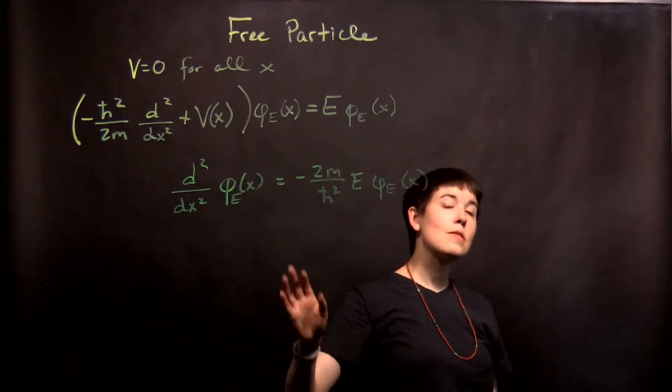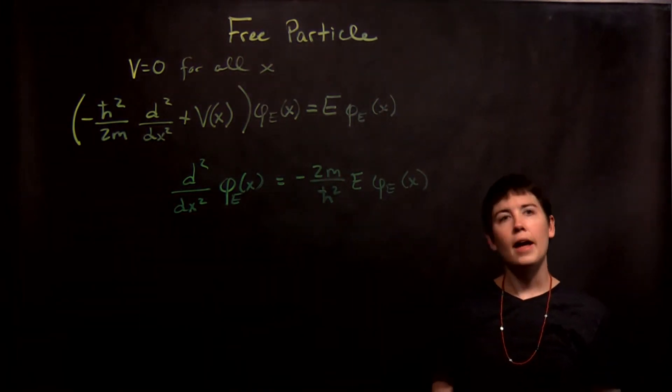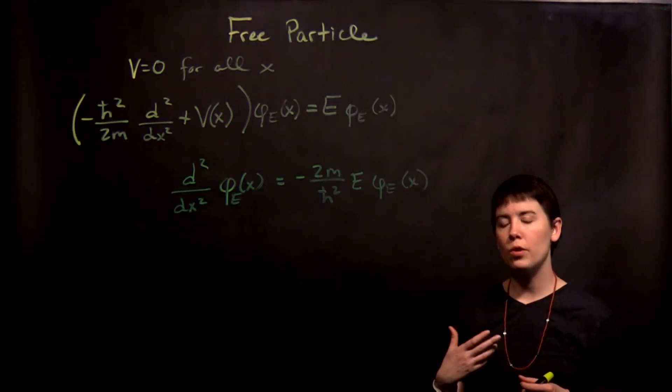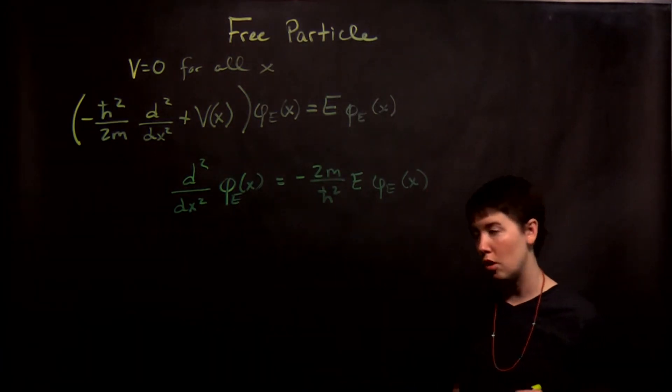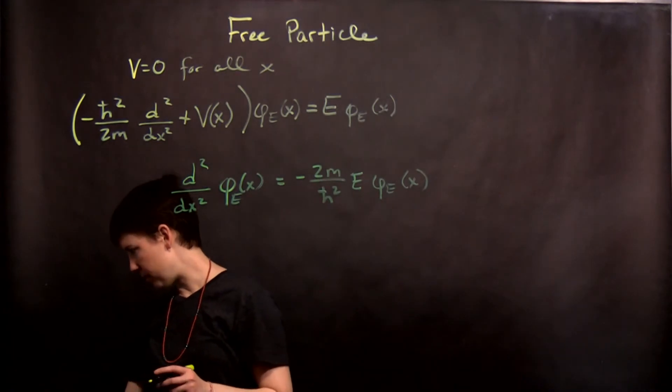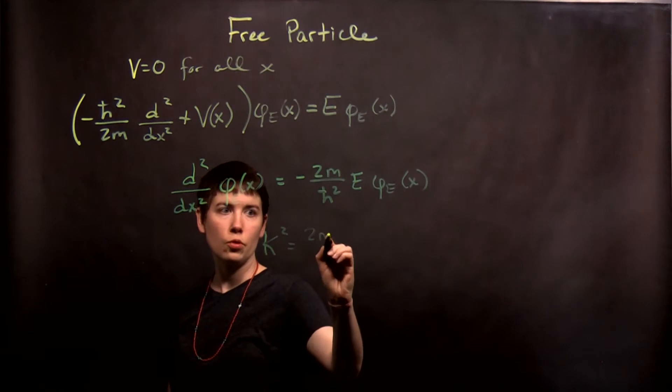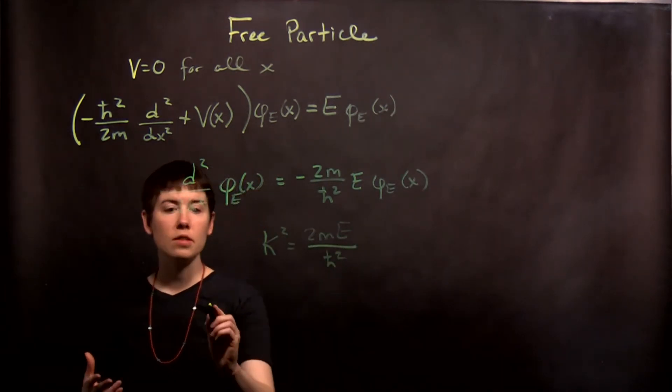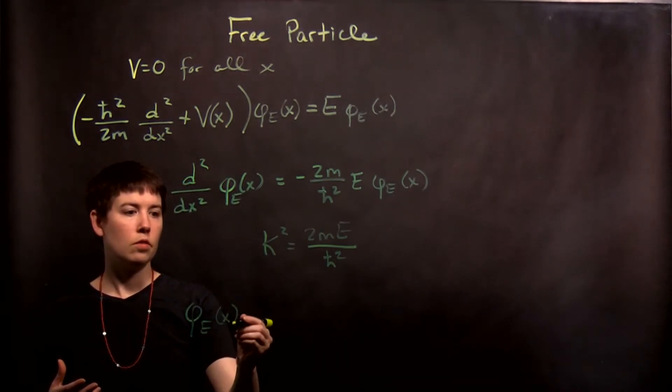This should look familiar. This is the same thing we saw when a particle was in a well. We talked about different types of solutions then, and you've done homework problems where you think about the sinusoidal versus the complex exponential form. So we can write this as k² equals 2mE over ℏ².